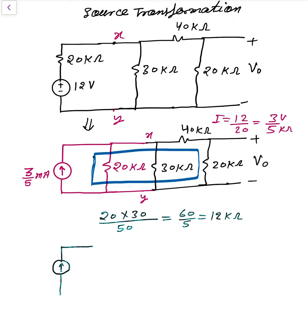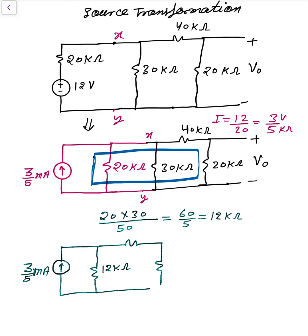That gives 12 kilo ohms. So finally, the circuit has the 3/5 milli ampere current source, a 12 kilo ohm resistor in parallel, then a 40 kilo ohm resistor, and the 20 kilo ohm with V0 (plus minus).